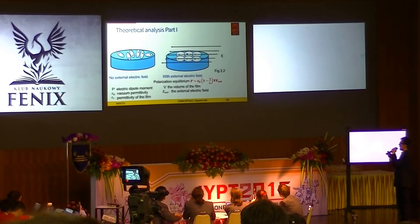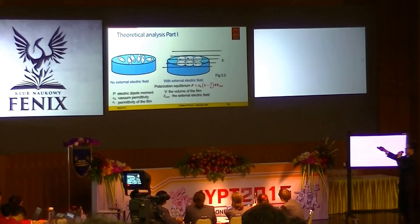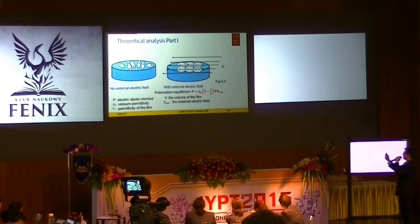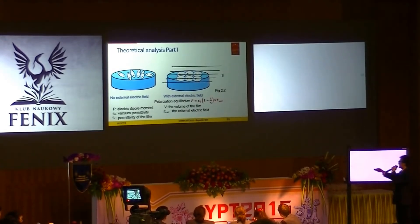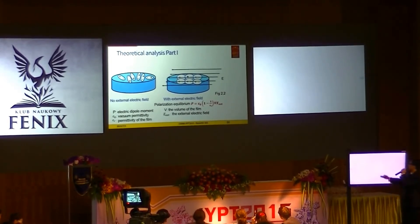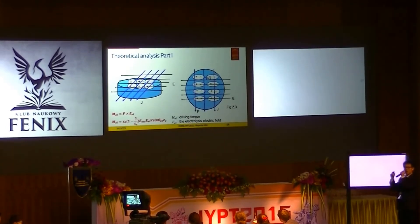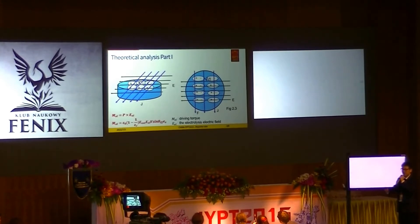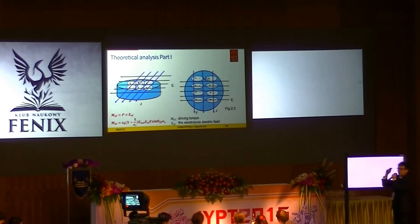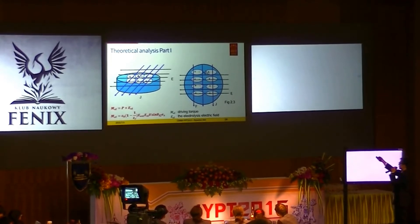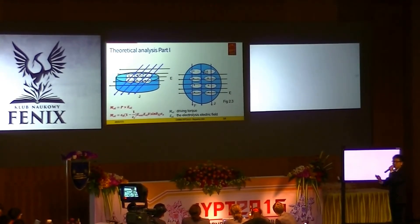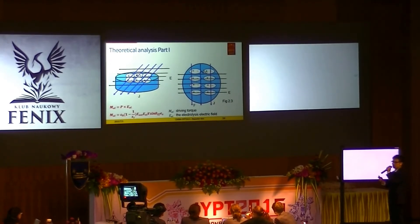This is another function of the external electric field. When there is no external electric field, the dipoles are completely random in the film. When I apply the external electric field, it causes polarization equilibrium, shown by this equation. I then apply a current — since the film has achieved polarization equilibrium, positive charge accumulates on one side and negative charge on the other. Adding a current causes the charge to migrate, which produces a constant driving torque on the film, causing the rotation. Here is the equation for the driving torque.